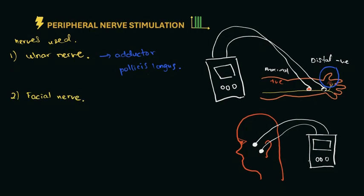Next, the most commonly used nerve in peripheral nerve stimulation is the facial nerve. As before, there will be two leads, the distal black negative terminal and the proximal positive terminal. The muscle that will be stimulated is the corrugator supercilii, which can be observed by the twitching of the eyebrow.